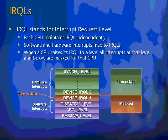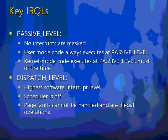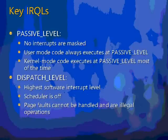The key IRQLs are passive level at the bottom, which is what Windows tries to remain at all the time. Even in kernel mode, it wants to be at passive level, meaning no interrupts are masked off. User mode code is always executed at passive level, so you can never be in user mode code at any higher IRQL. Kernel mode code can raise the IRQL in response to a hardware interrupt, or for certain software operations like synchronizing between two CPUs.